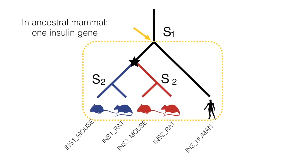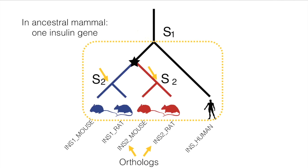There was only one copy of the insulin gene in the ancestor of all mammals, so all insulin genes in mammals are derived from it and should be in one HOG. This includes the human insulin gene. In terms of orthology and paralogy relationships, a HOG contains orthologs and in-paralogs. Orthologs are genes related by speciation — this could be the basal speciation used to define the HOG, S1 in this example, or a subsequent speciation, S2.